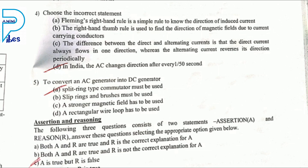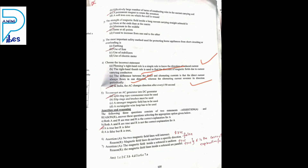Choose the incorrect statement: Fleming's right hand rule is a simple rule to know the direction of induced current. Right hand thumb rule is used to find the direction of magnetic field due to a current-carrying conductor. In Fleming's right hand rule: hand is placed in horizontal direction, thumb shows direction of force or motion, first finger shows direction of magnetic field, mid finger shows direction of induced current.